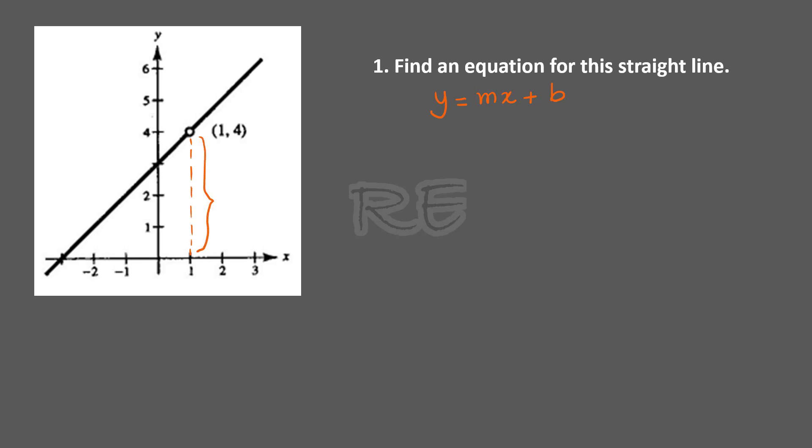First we will look for the slope. We have a vertical change of 4 over a horizontal change of 4. The rise is 4 and the run is also 4, so the slope is 4 over 4, which is 1.